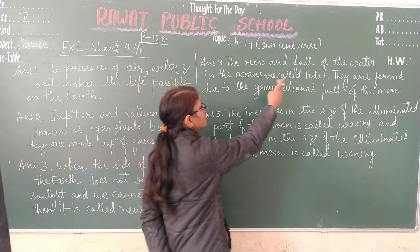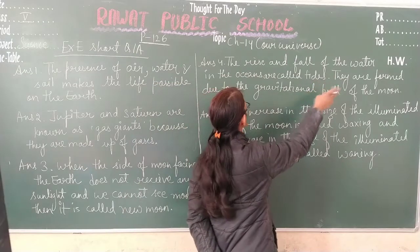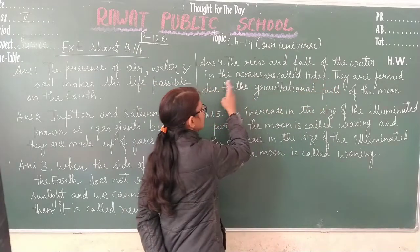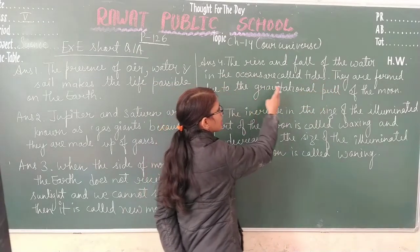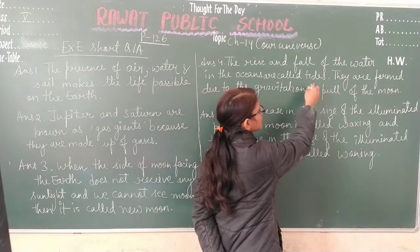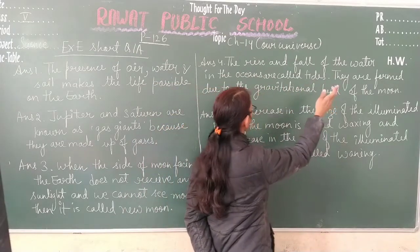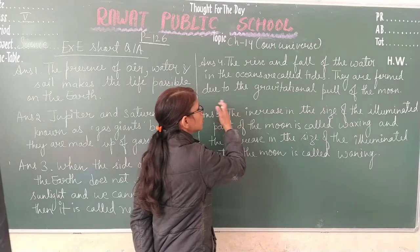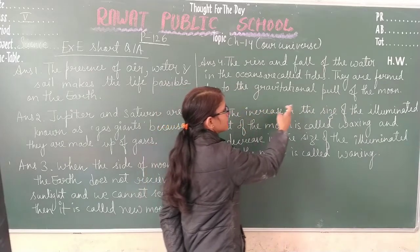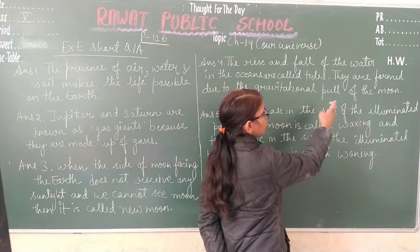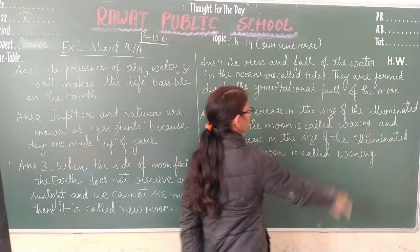The answer of question 4: the rise and fall of water in the oceans are called tides, and they are formed due to the gravitational pull of the moon.